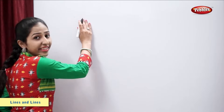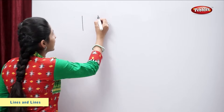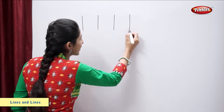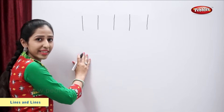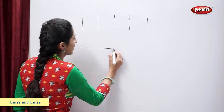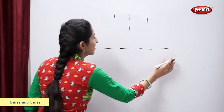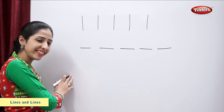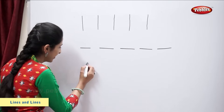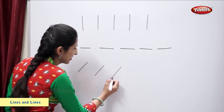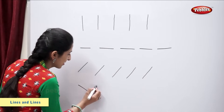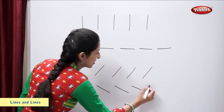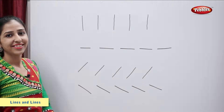Now let's draw some more lines. Standing lines. These are all standing lines. Sleeping lines. All these are sleeping lines. Now, slanting lines. These are slanting lines.